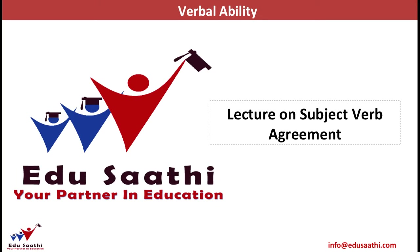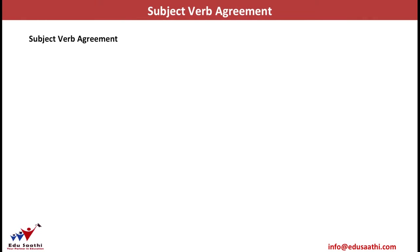Welcome to edusati.com, the partner in education. In this session we will discuss the concept of subject-verb agreement. Subject-verb agreement stresses that the verb must agree with the subject in number and person. If the subject is singular, the verb that follows must also be singular, whereas if the subject is plural, the verb must also be plural.